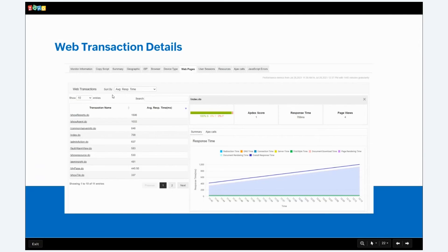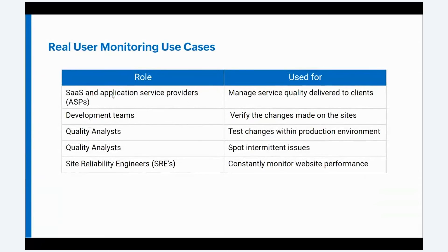Now let's talk about real user monitoring use cases. SaaS and application service providers can use real user monitoring to monitor and manage service quality delivered to their clients. Development teams can use it to verify if changes propagated to sites have the intended effect or cause any errors. Quality analysts can use it to test changes within a production environment and spot intermittent issues that only occur under specific conditions. Site reliability engineers can use real user monitoring for constant monitoring of a website to see when and where page load times increase to prevent timeouts caused by traffic spikes.